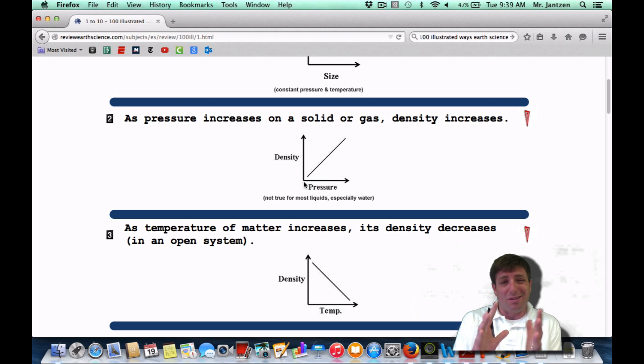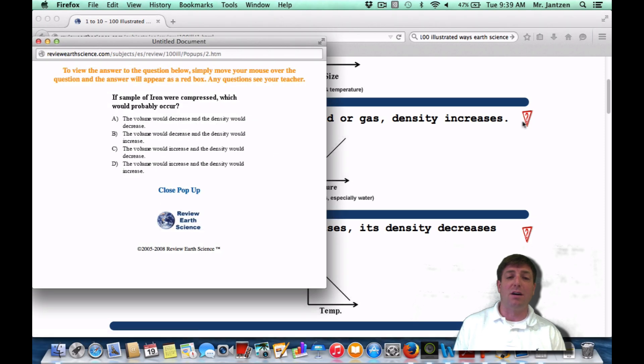So when you squish or squeeze it together, the density is going to increase. If you're going to see that as a Regents question, it says if a sample of iron were compressed, what would probably occur? Once again, you're squishing the sample, so that means the volume is actually decreasing, but the density is going up.